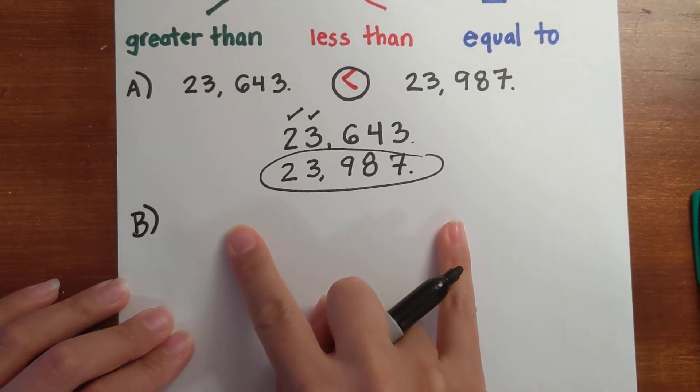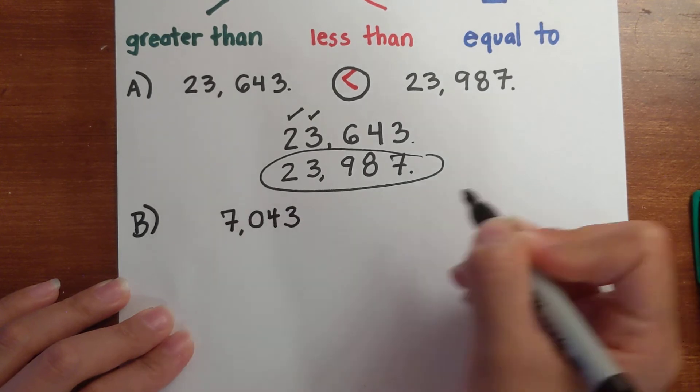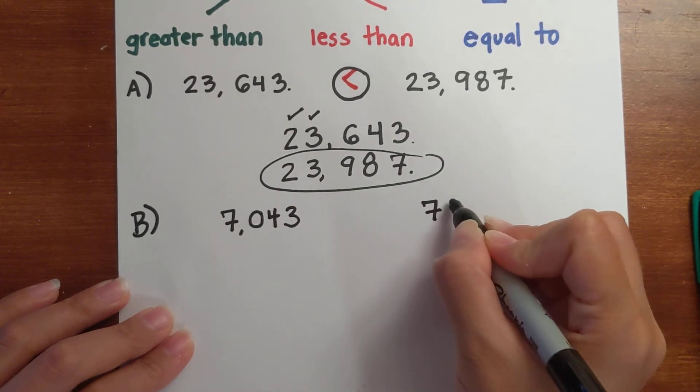Let's do two different values with two different numbers of digits. So let's say 7,043 and—excuse me—743.